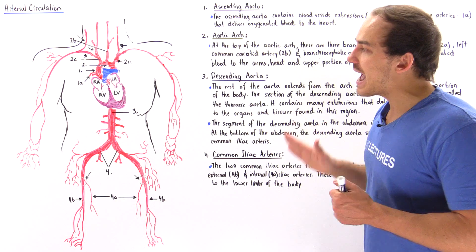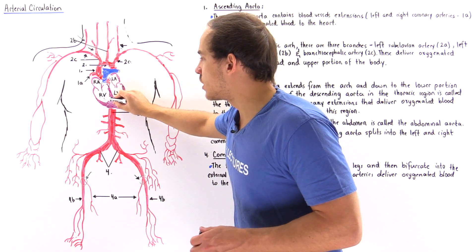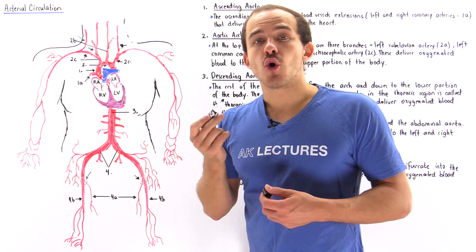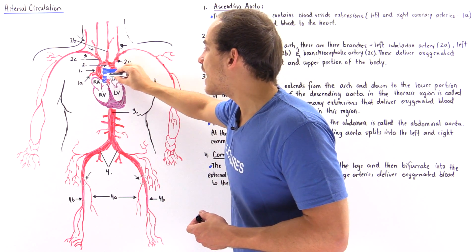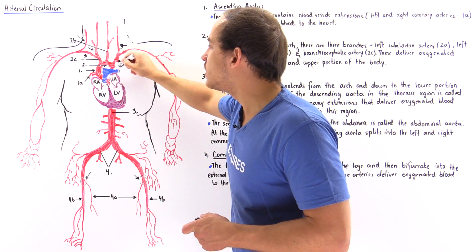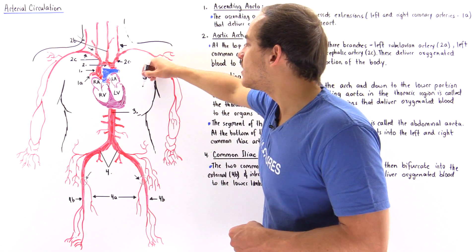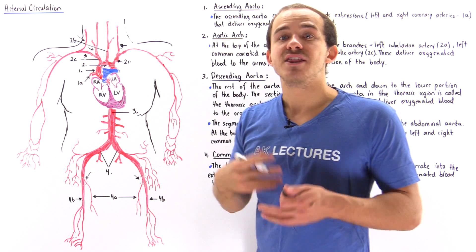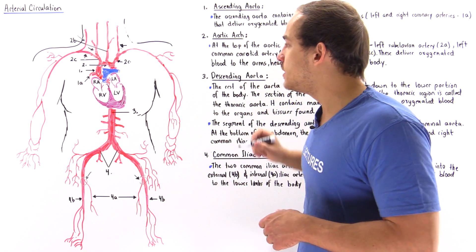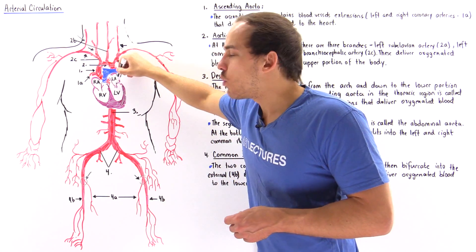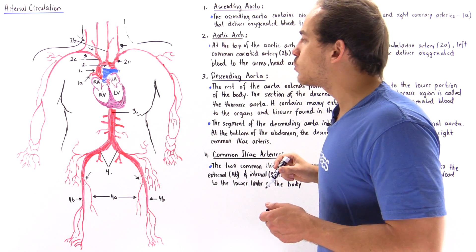We have many more arteries not shown — for example, our pulmonary artery. When the right ventricle contracts, it forces deoxygenated blood into the pulmonary trunk, which extends into the left and right pulmonary arteries. Those arteries carry deoxygenated blood to the left and right lungs, where we actually oxygenate the blood. The blood then returns via the pulmonary veins to the left atrium, moves into the left ventricle, and continues that same cycle.